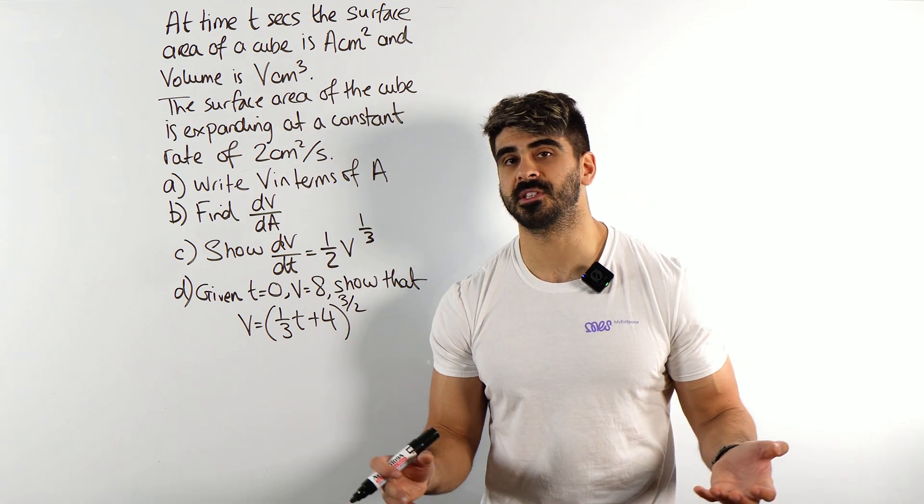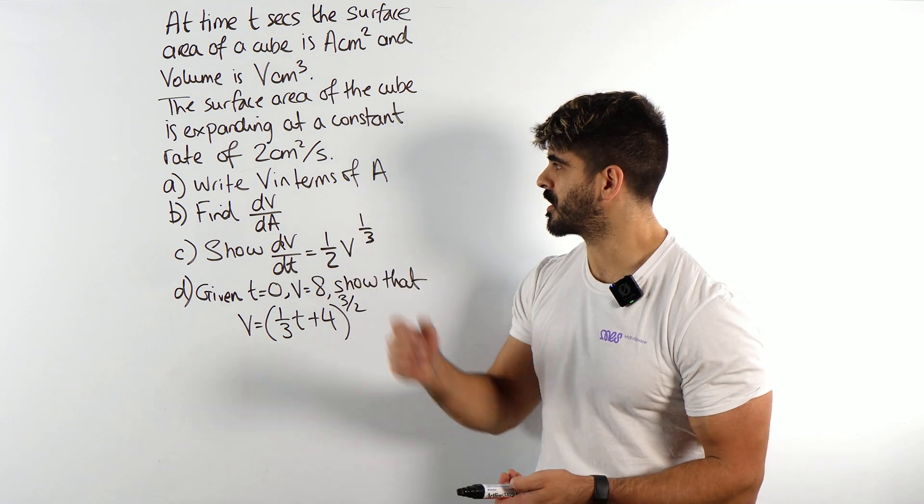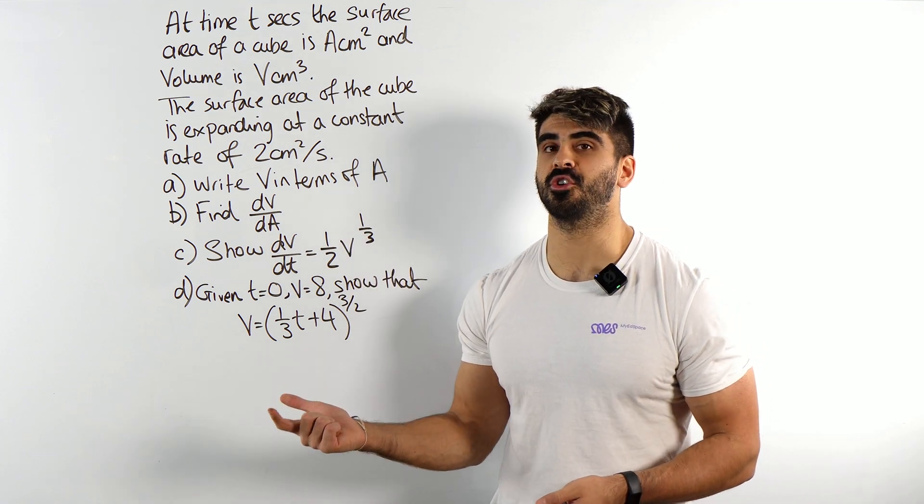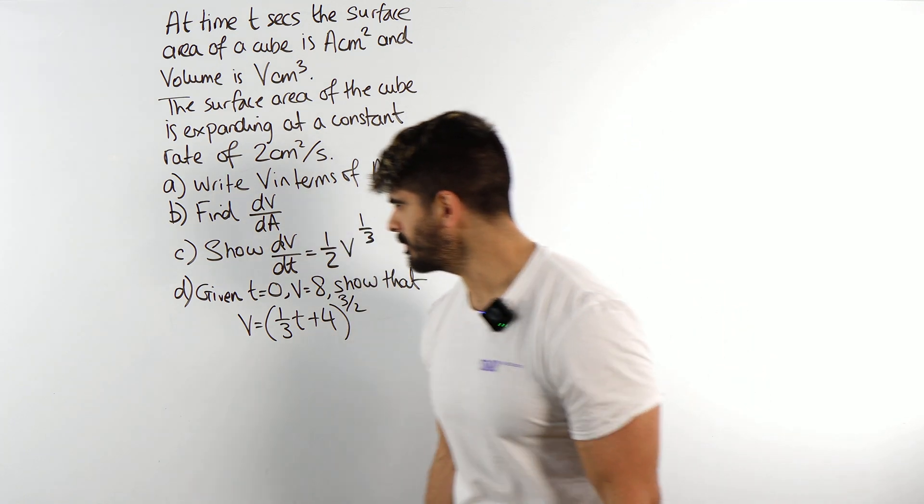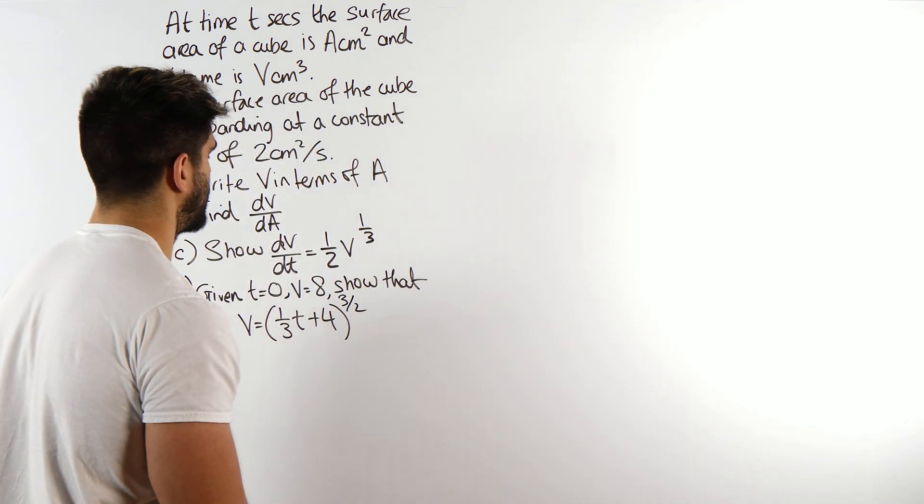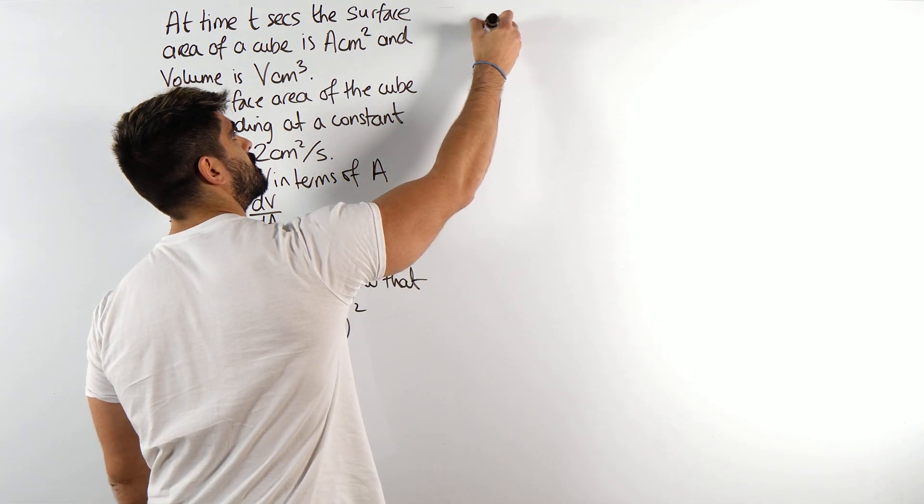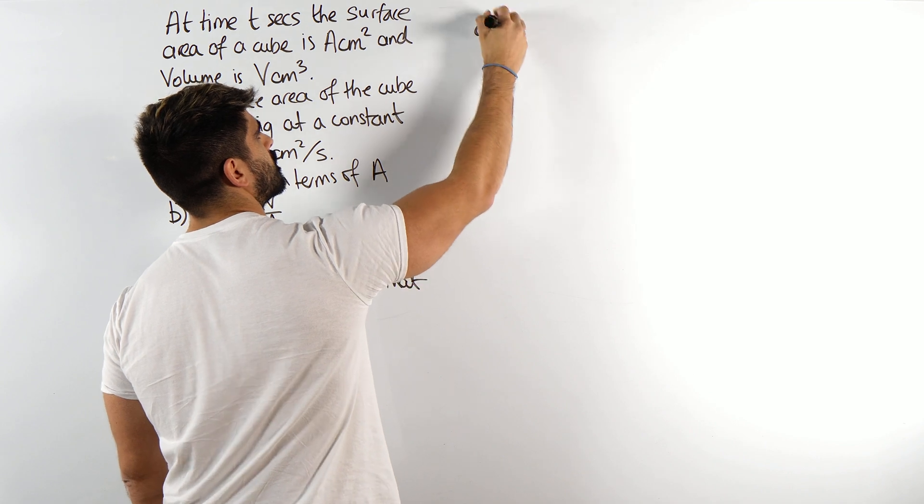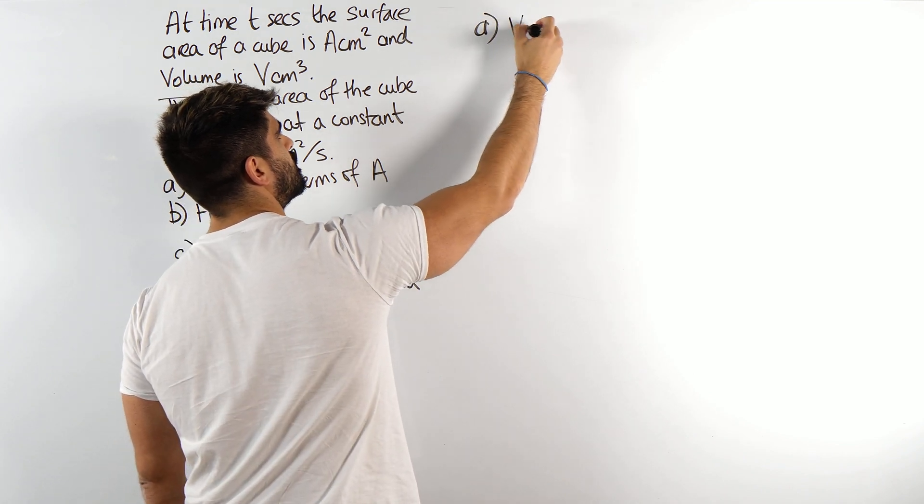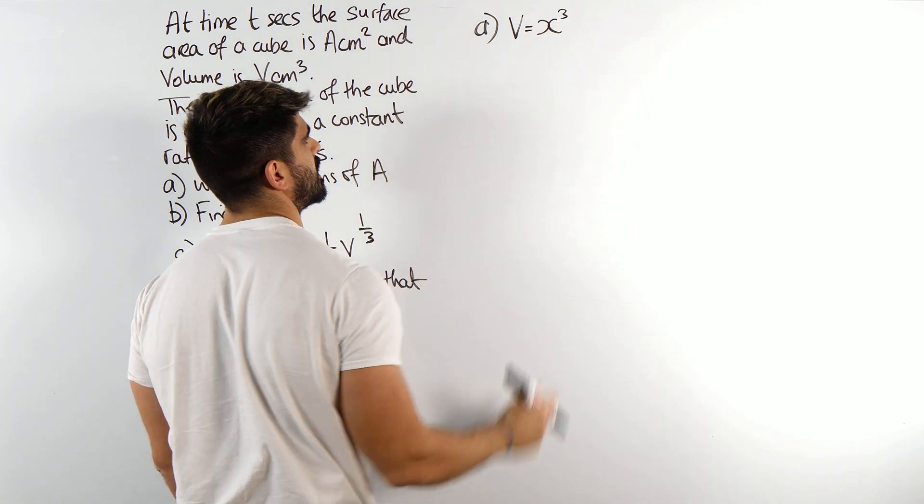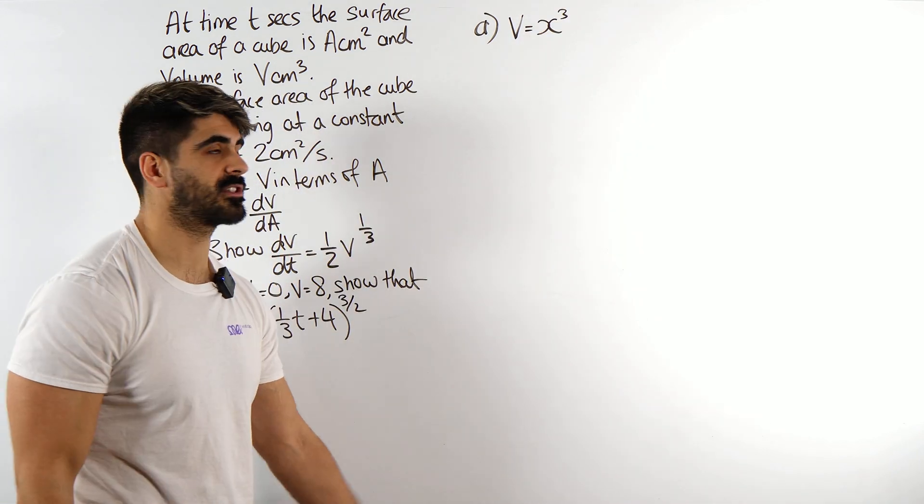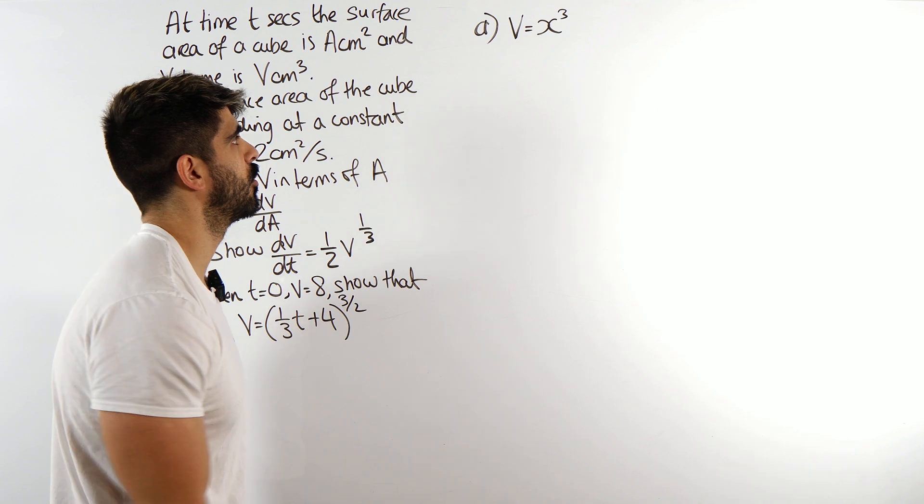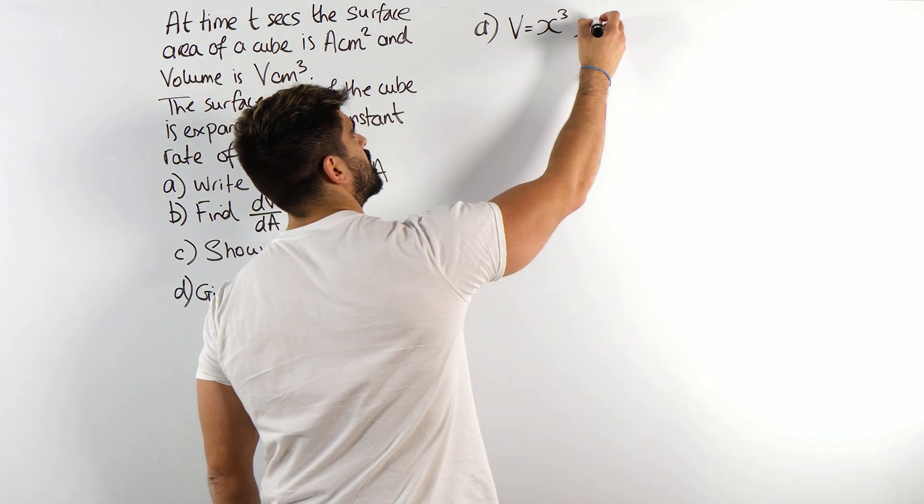At time t seconds, the surface area of a cube is A centimeters squared and the volume is V. The surface area of the cube is expanding at a constant rate of two centimeters squared per second. Part A, write V in terms of A. Okay, so here we obviously have a cube.